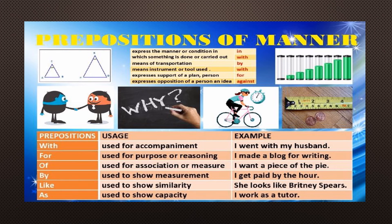Look at the usage: With for accompaniment — I went with my husband. For for purpose or reasoning — I made a blog for writing, so the purpose of the blog is writing. Of is used for association or measure — I want a piece of the pie. By is used to show measurement — I get paid by the hour. Like is used to show similarity — she looks like Britney Spears. As is used to show capacity — I work as a tutor, meaning I work in the capacity of a tutor. These are the different prepositions of manner.